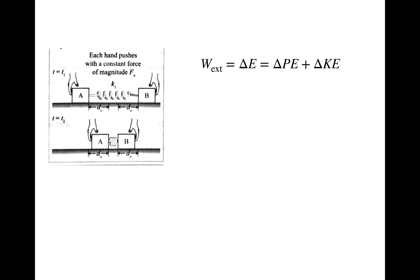Another way to understand this: we know the external work was positive, and that equals the total change in energy of the system, which is the change in potential energy plus the change in kinetic energy. Since we know the change in kinetic energy is zero, but there is some positive work done, the only way for that to be true is if the change in potential energy is positive.